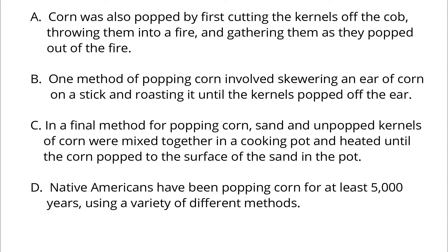A: The clue word is 'also', which implies that a similar item is already mentioned, so A must come after a statement that talks about a list item. B: Clue words are 'one method', which implies that this is the first item in the list. C: Clue words are 'in a final method', so this sentence should be the last item in a list. D: 'A variety of different methods' indicates a general idea. A through C talk about three specific ways of popping corn, while D is a general statement.